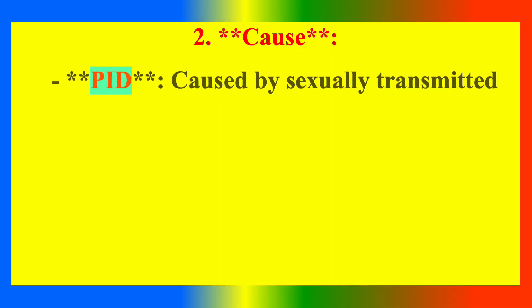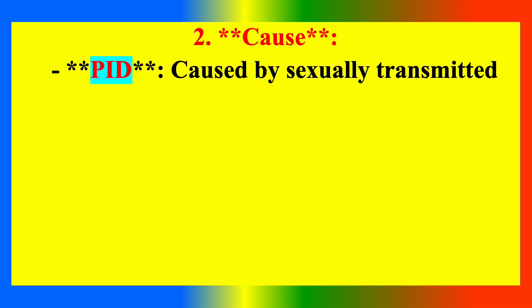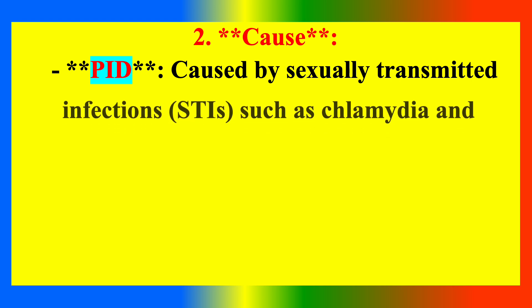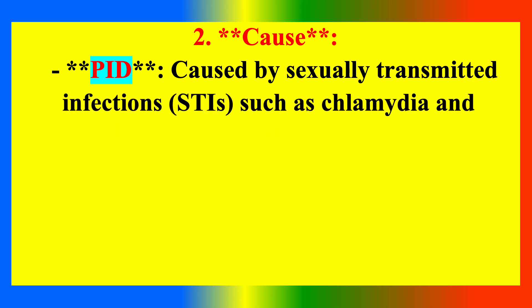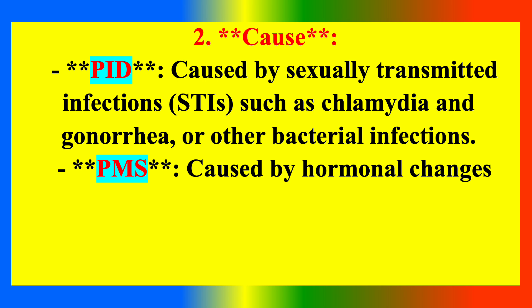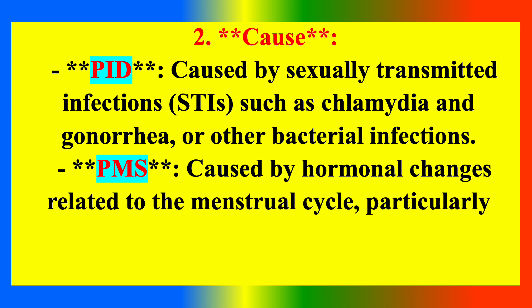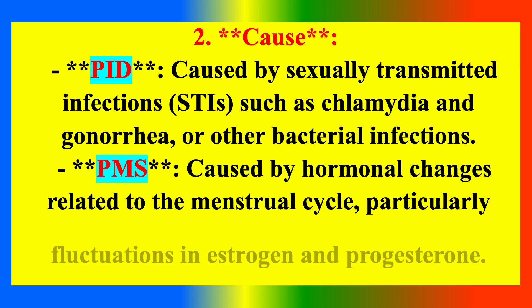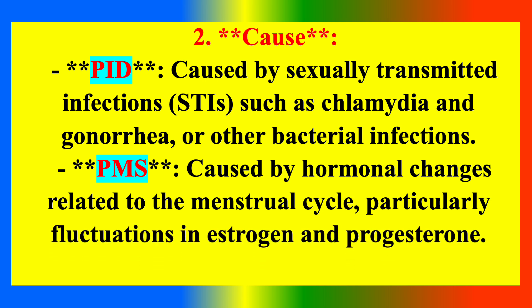Causes: PID is caused by sexually transmitted infections such as Chlamydia and Gonorrhea, or other bacterial infections. PMS is caused by hormonal changes related to the menstrual cycle, particularly fluctuations in estrogen and progesterone.